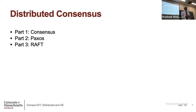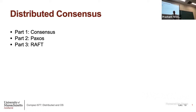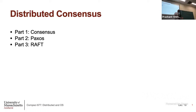Let us get started. We are going to continue our discussion from last time on fault tolerance, and today we look at the problem of consensus, specifically in distributed settings. I will talk about what consensus is first, and then most of the lecture is going to focus on two very popular methods: Paxos and Raft. That will basically end the chapter on fault tolerance, and starting next time we will look at web applications.